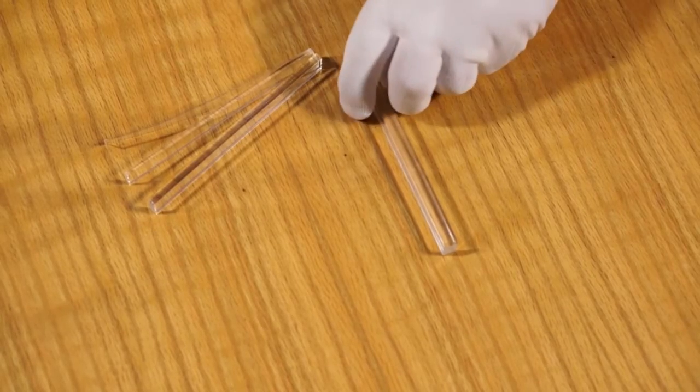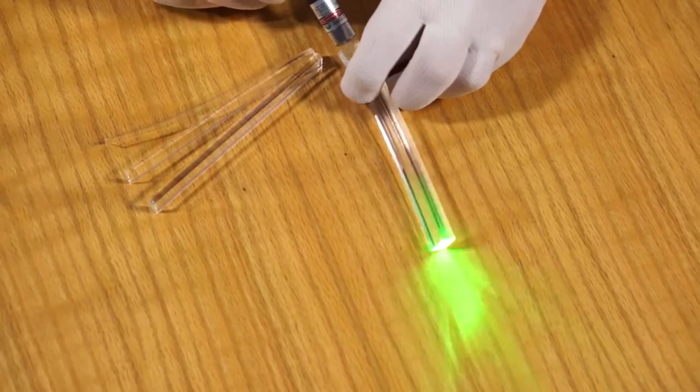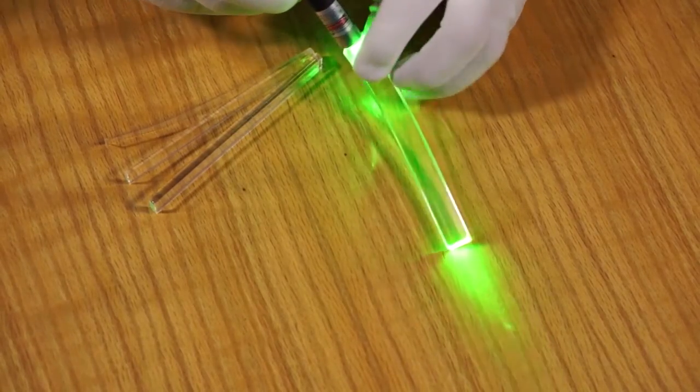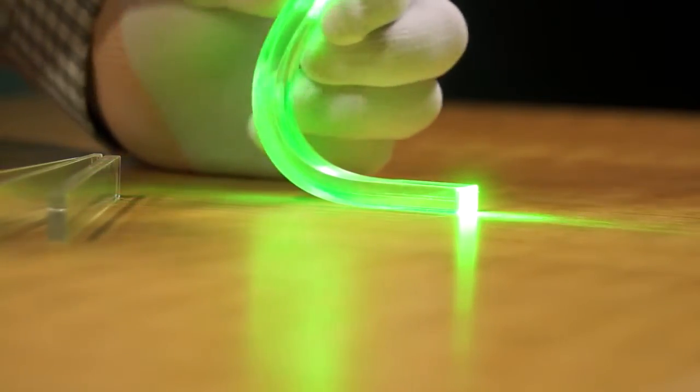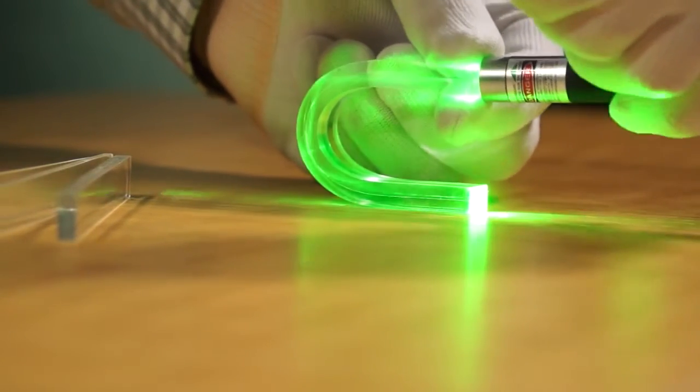Another demonstration is how the material will form a basic light guide. While bending the bar, we hold a laser to the end of the bar. This changes the direction of the light.